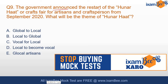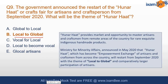The ninth question: the government announced the restart of Hunar Haat — a crafts fair for artisans and craftspeople — from September 2020. What is the theme of Hunar Haat? As the name suggests, Hunar Haat is a market for talent. The theme is 'Local to Global.' It is organized under the Ministry of Minority Affairs — not MSME — announced in May 2020.